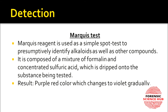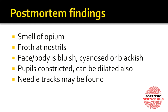For detection, the Marquis test is used as a simple spot test to presumptively identify alkaloids, and therefore opium. The Marquis reagent consists of formalin and concentrated sulfuric acid: 3 ml of H2SO4 with three drops of formalin added to the substance being tested. A purple-red color that gradually changes to violet indicates the presence of opium.